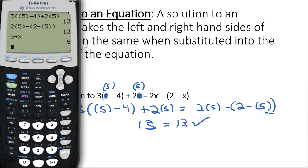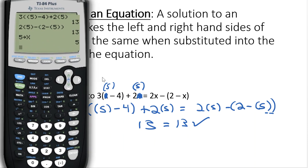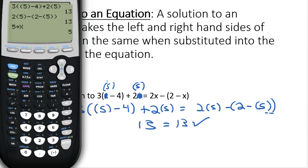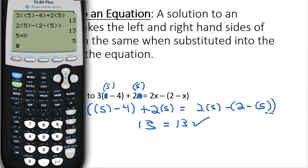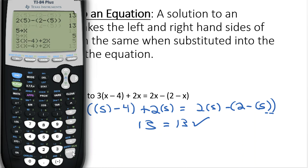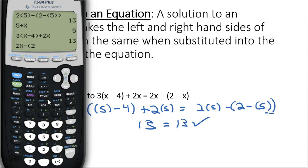Now since the calculator thinks x equals 5, we can actually type out both sides of the equation without having to do the whole double-parenthesis substitution. So: 3, parenthesis, x minus 4, close parenthesis, plus 2x — this is the left-hand side of the equation. Press enter. Then type out the right-hand side: 2x minus 2 minus x, close parenthesis. Press enter. We get 13 equals 13. It is indeed the solution.